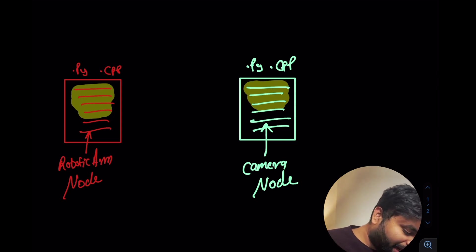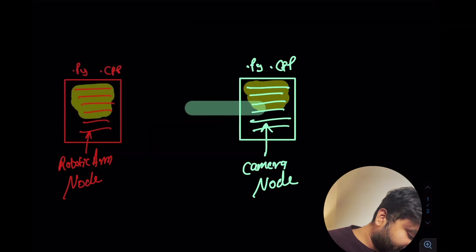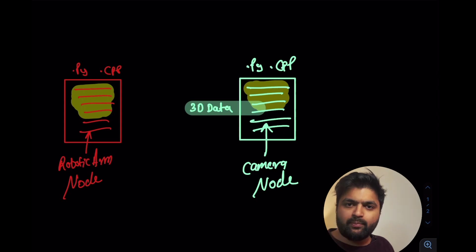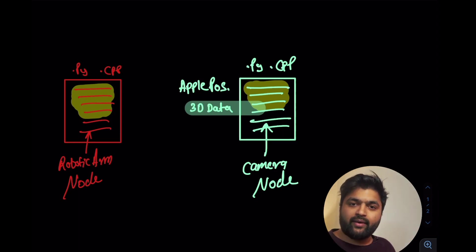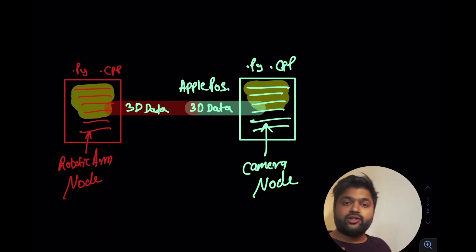In this case, what happens is my camera node publishes one information on the 3D data. The topic is, let's say, apple position - there is an apple in front of you and you want to pick up an apple. So my topic is going to be apple position. In this case my robotic arm node is going to subscribe to this apple position topic and with this it's also going to get this 3D data which it's going to use to go and pick up the apple. It is as simple as that.